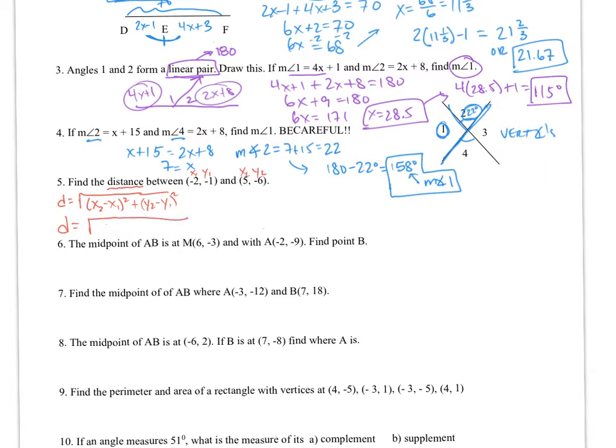So this is going to be 5 minus negative 2 squared plus negative 6 minus negative 1 squared. Cleaning this up, I get the distance equal to the square root of 7 squared plus negative 5 squared. This becomes the square root of 49 plus 25, which gives me the square root of 74. You can leave it like that, or you can approximate this out to be 8.6 units.